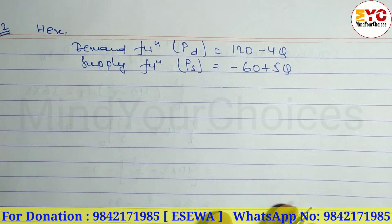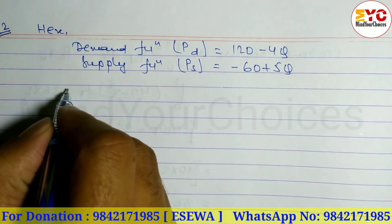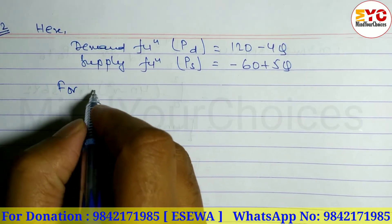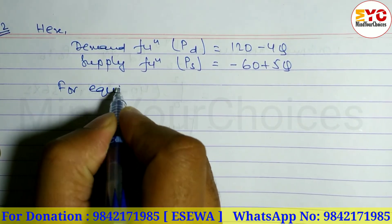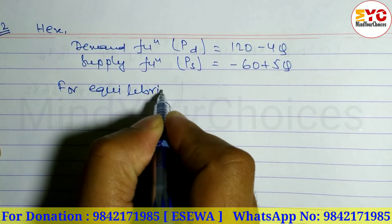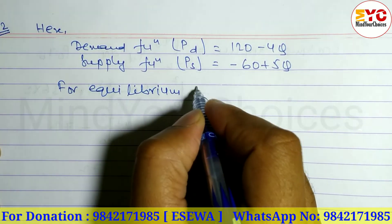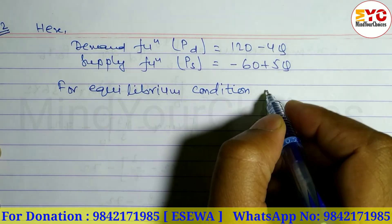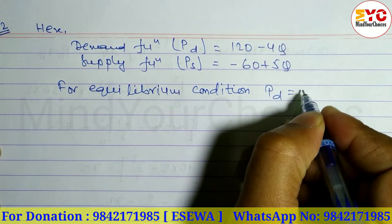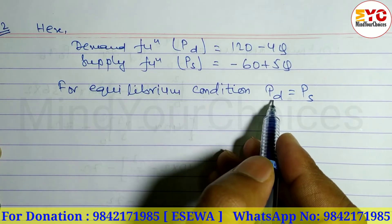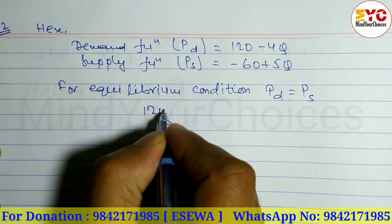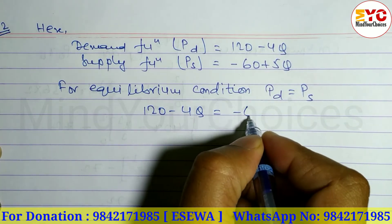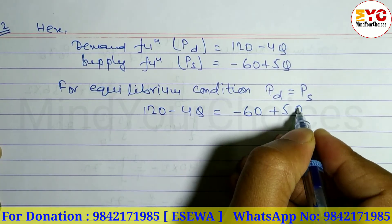So we can write here the condition for equilibrium. The condition for equilibrium is PD = PS, that is demand equals supply. So: 120 - 4Q = -60 + 5Q.